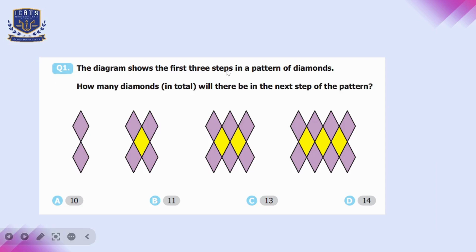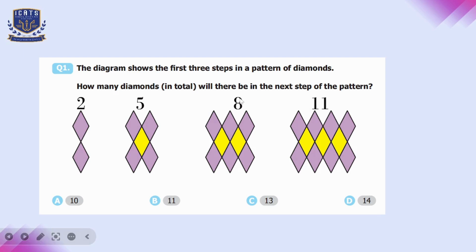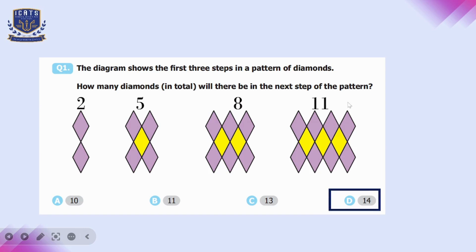Question number one: the diagram shows the first three steps in a pattern of diamonds. How many diamonds in total will there be in the next step? We can see that in the first step there are two diamonds, then five, then eight. It's a jump of three each time. Eight plus three is eleven, and eleven plus three is fourteen. So option D is the correct answer.